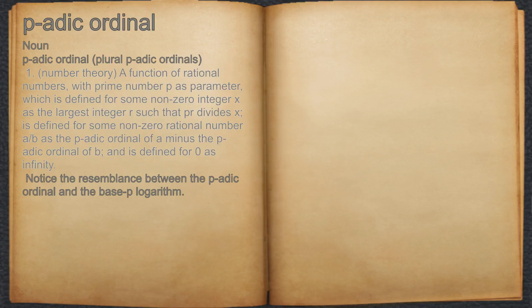which is defined for some non-zero integer X as the largest integer R such that P^R divides X; is defined for some non-zero rational number A/B as the P-adic ordinal of A minus the P-adic ordinal of B; and is defined for 0 as infinity.